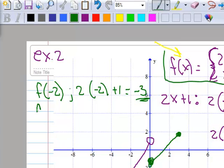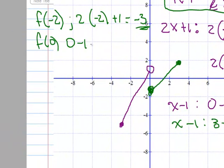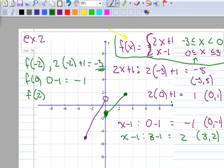Next, find the function at 0. Coming up to the piecewise function, 0 appears in both pieces' boundaries — but we use the second piece because only the second piece includes 0. So x minus 1 gives 0 minus 1, which is negative 1. The last evaluation is the function at 2. Since 2 is between 0 and 3, we use the second piece again: x minus 1, so 2 minus 1 is 1.